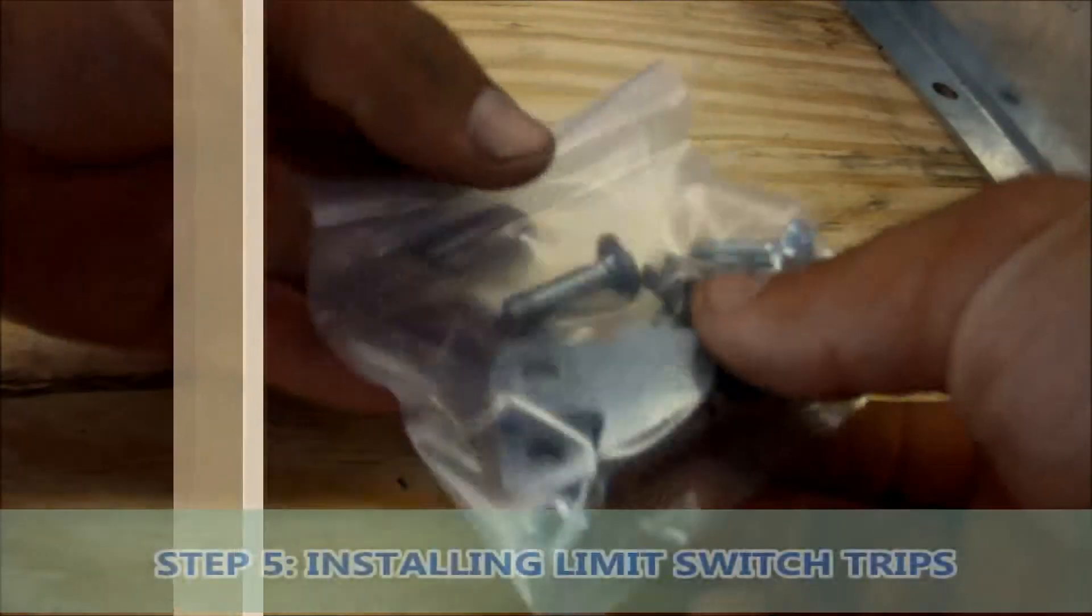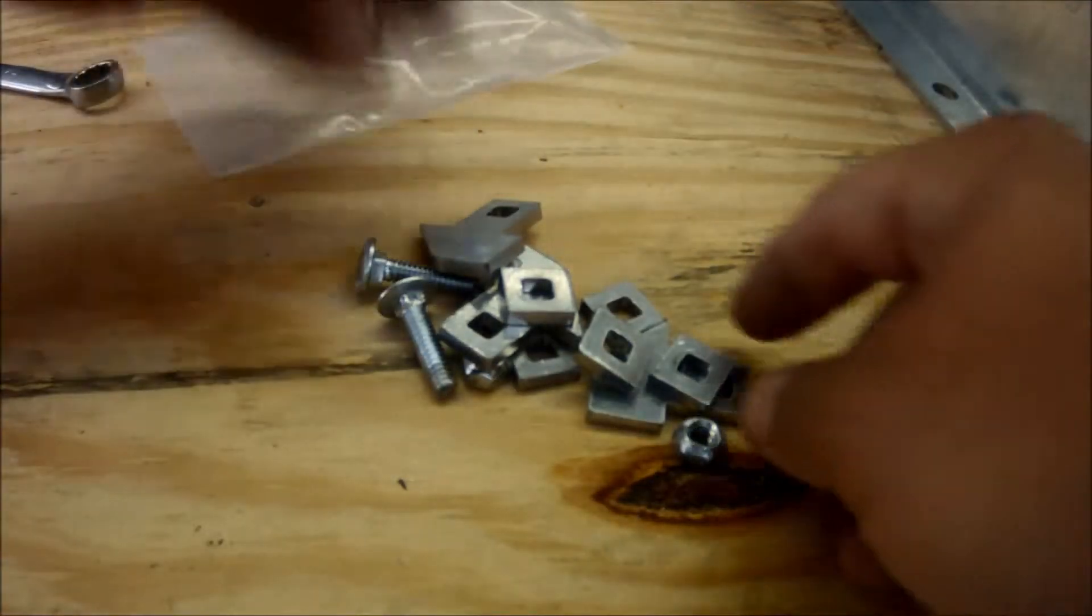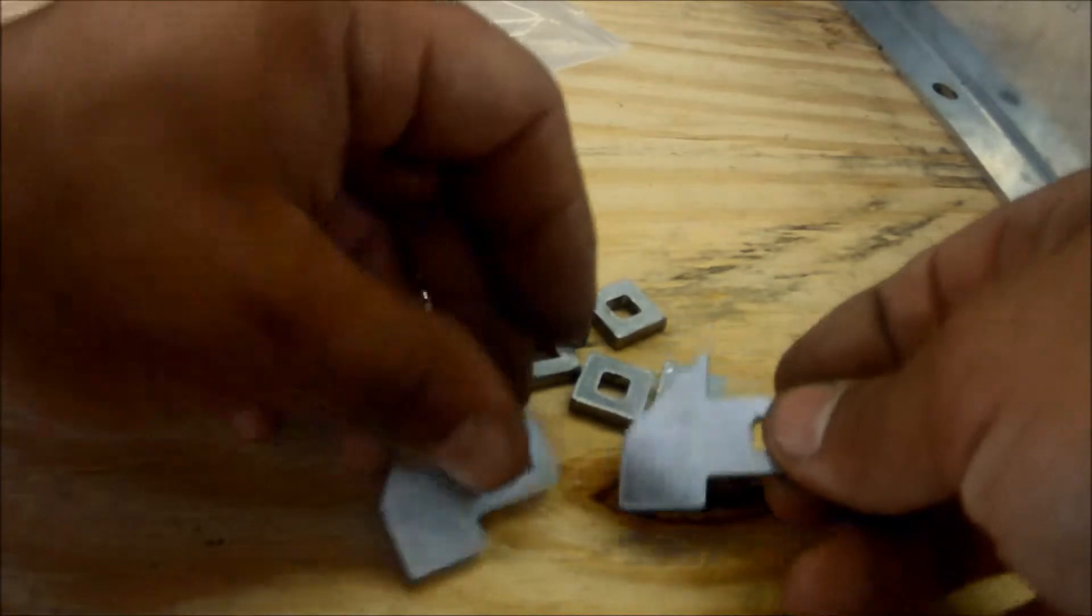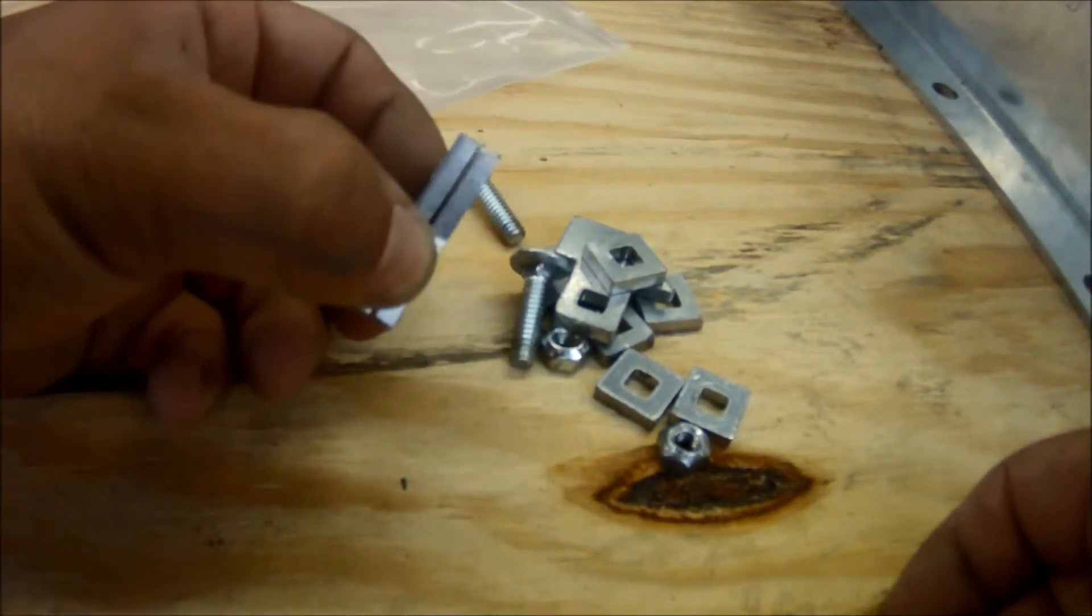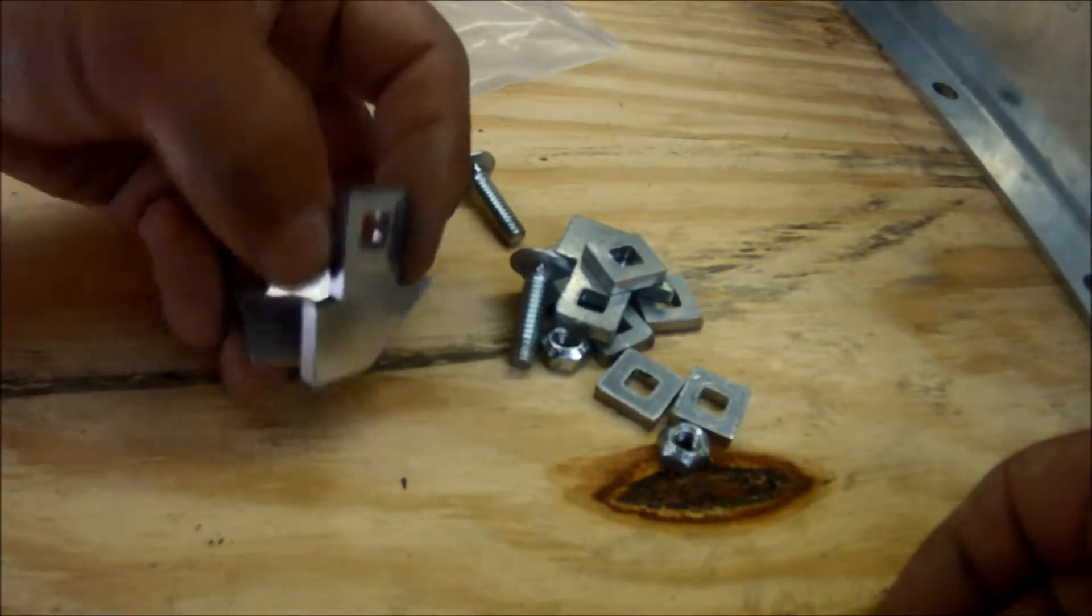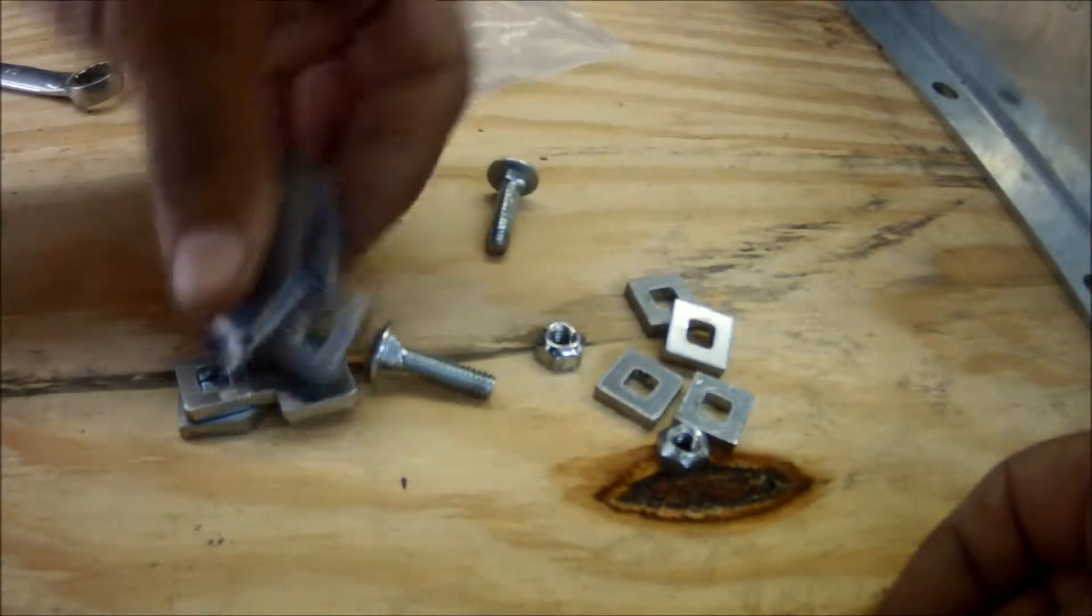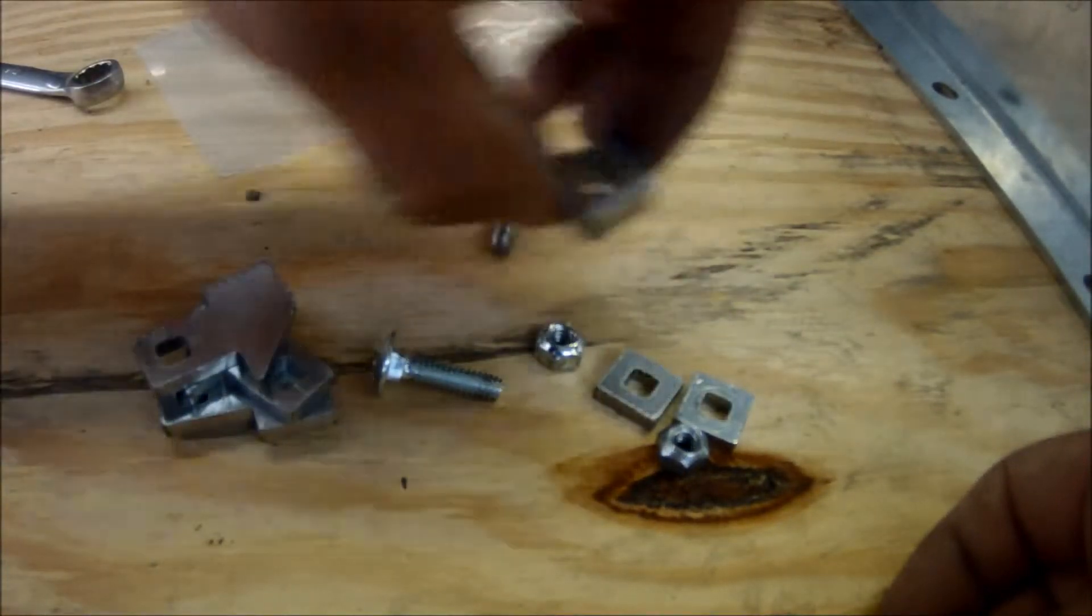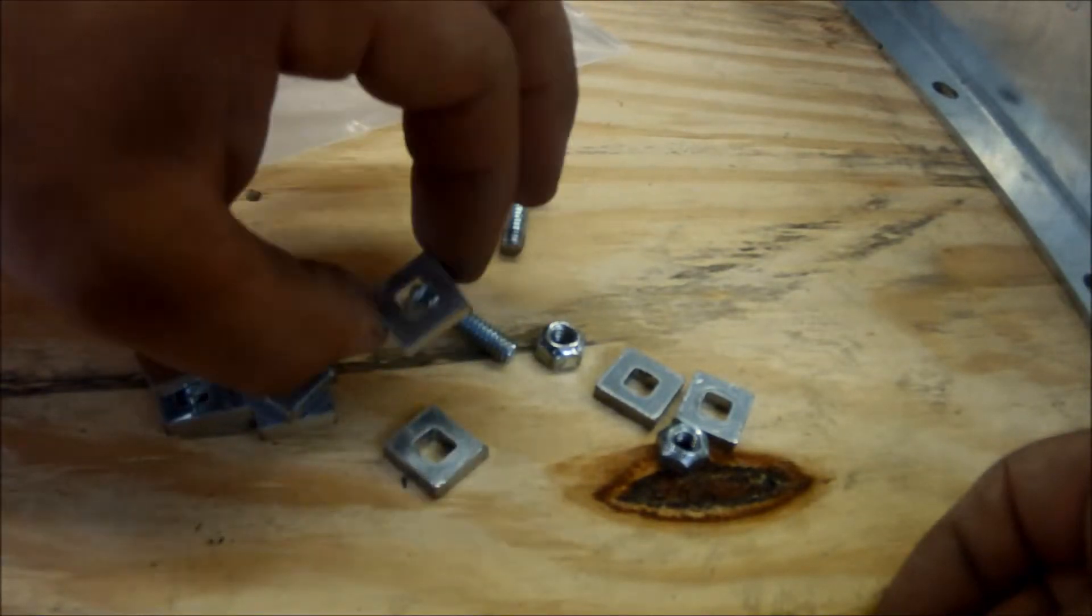Next, we will install the limit switch trips. Included in this hardware pack should be four limit switch trips and four outer shims along with two quarter by 20 bolts. These are the limit switch trips. There should be four of these brackets per kit. These are the outer shims. There should be four of these brackets per kit.